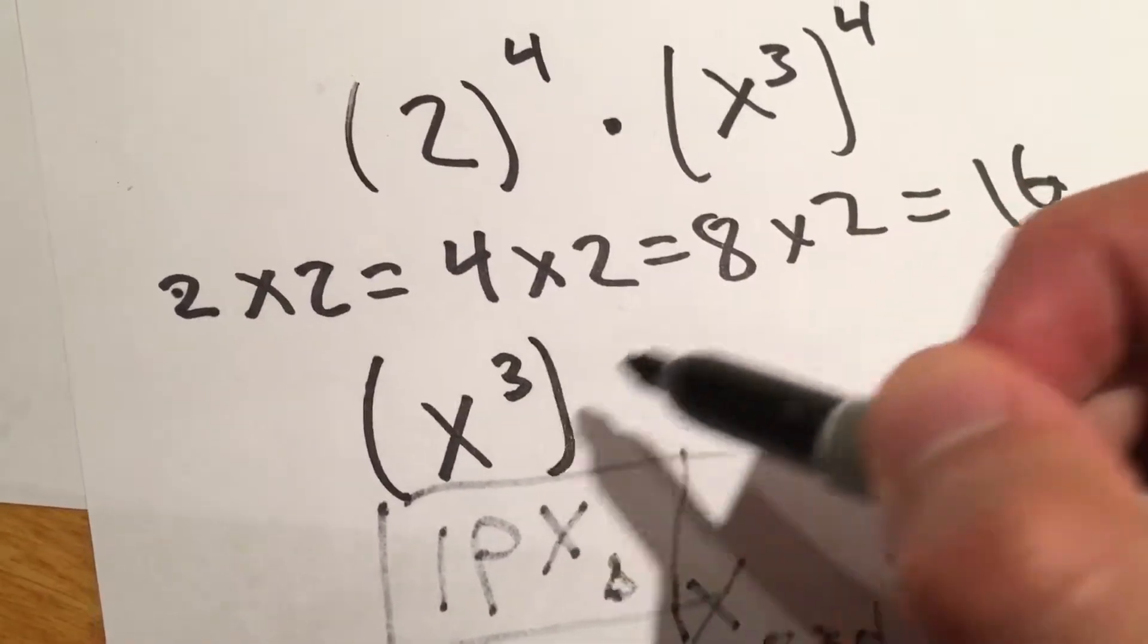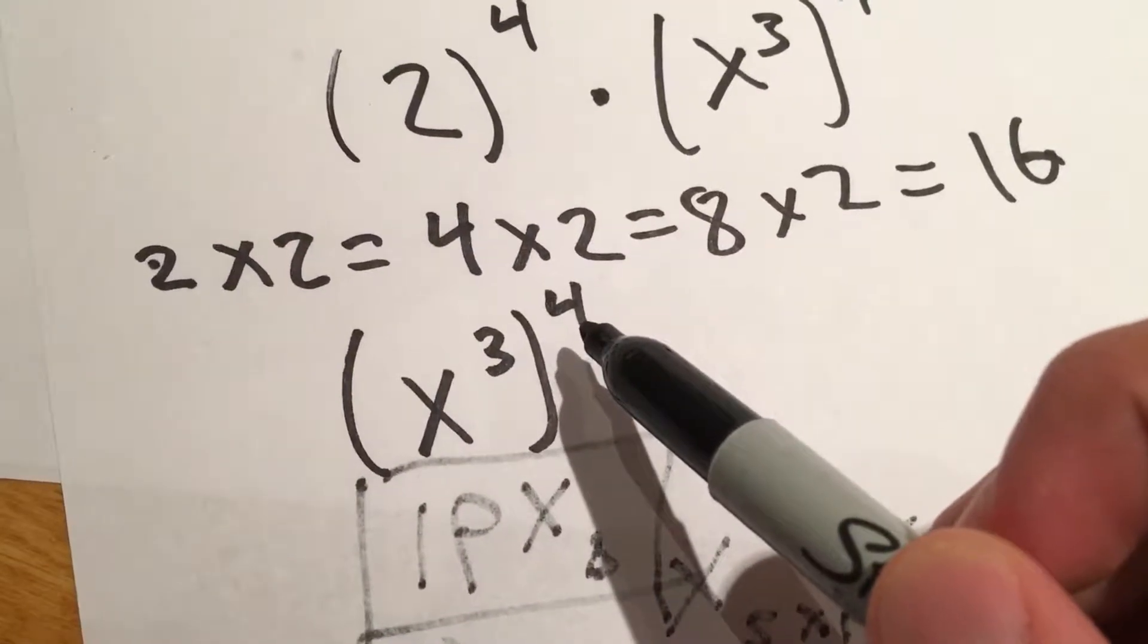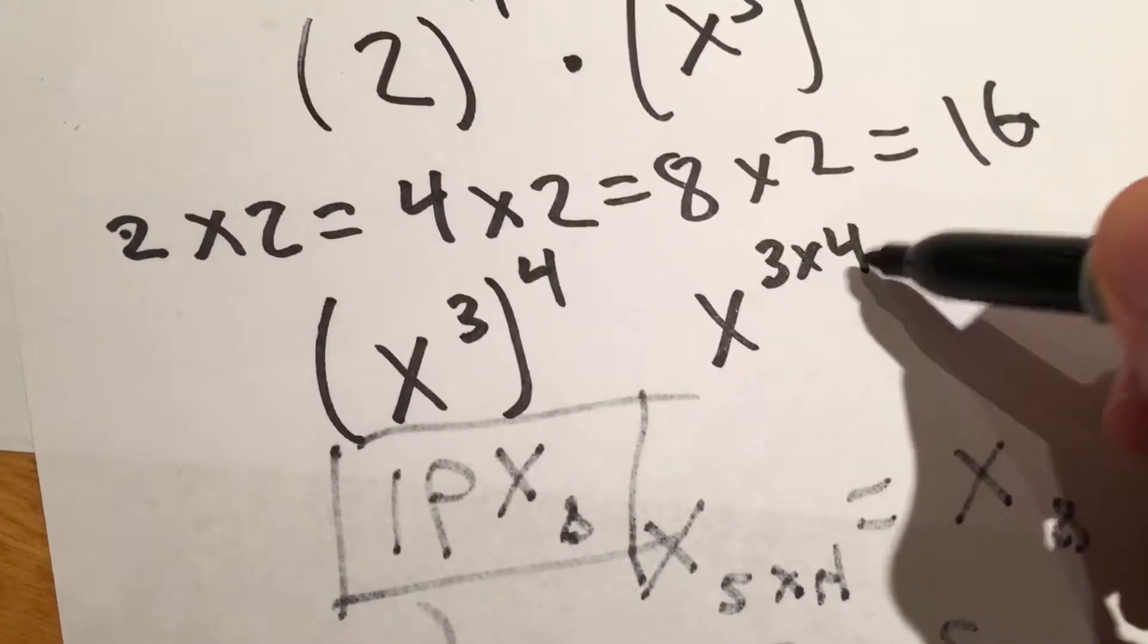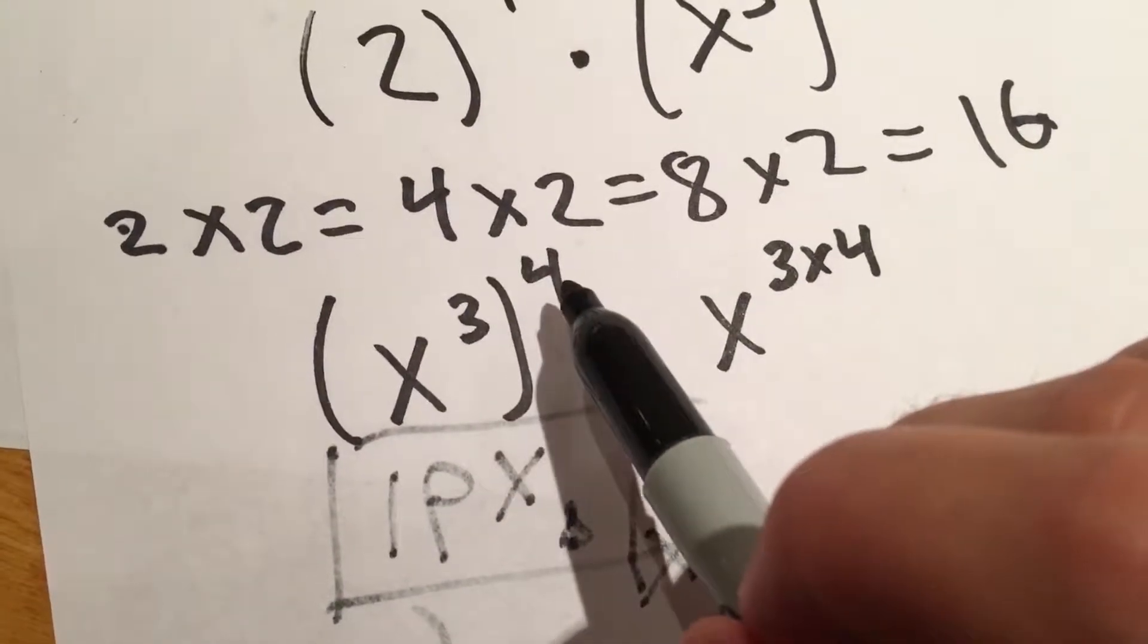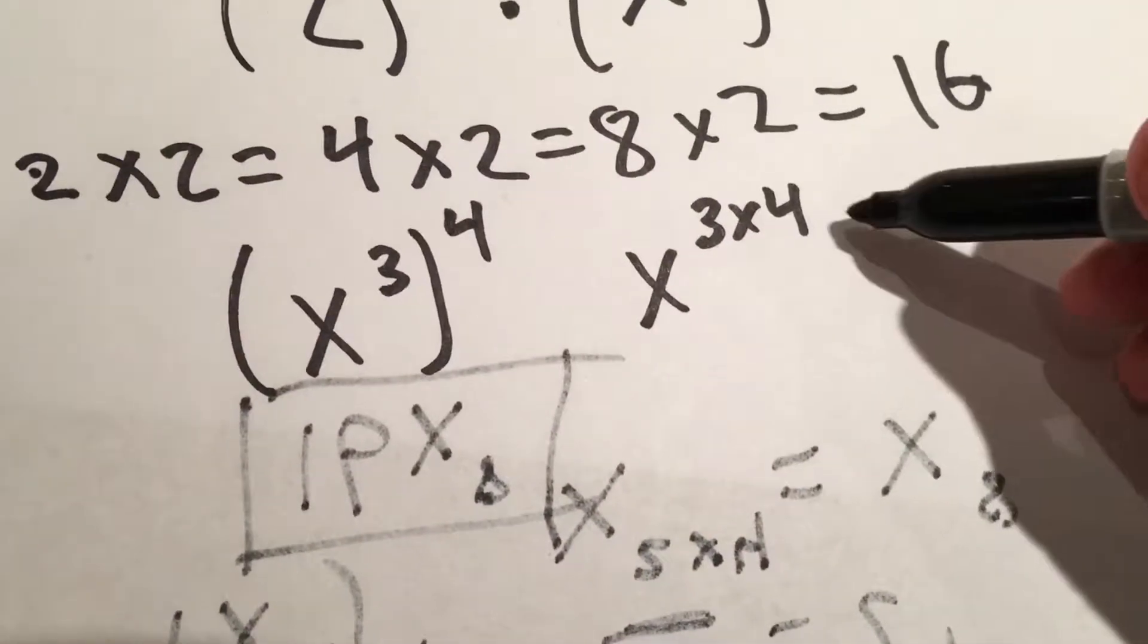For things like this, we can use an exponent rule that says we multiply the 3 and the 4, so it's x to the 3 times 4 because this exponent is on the outside.